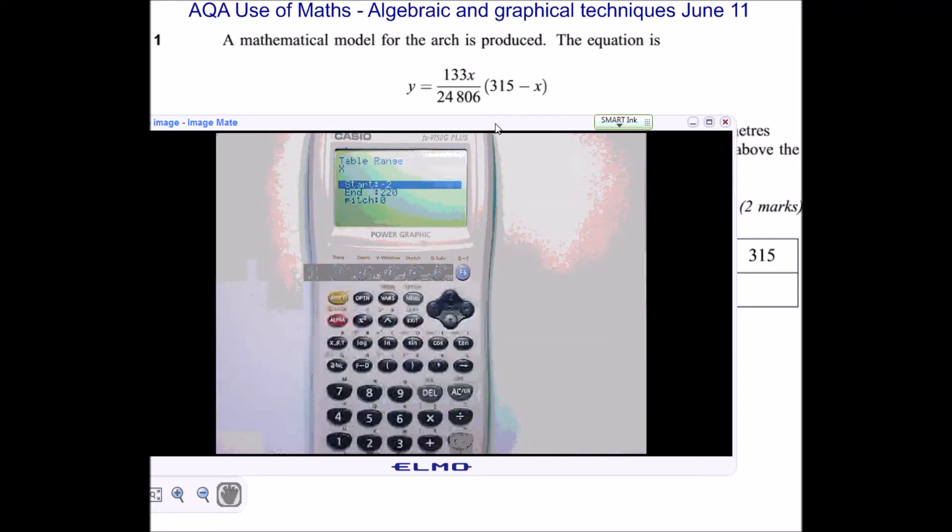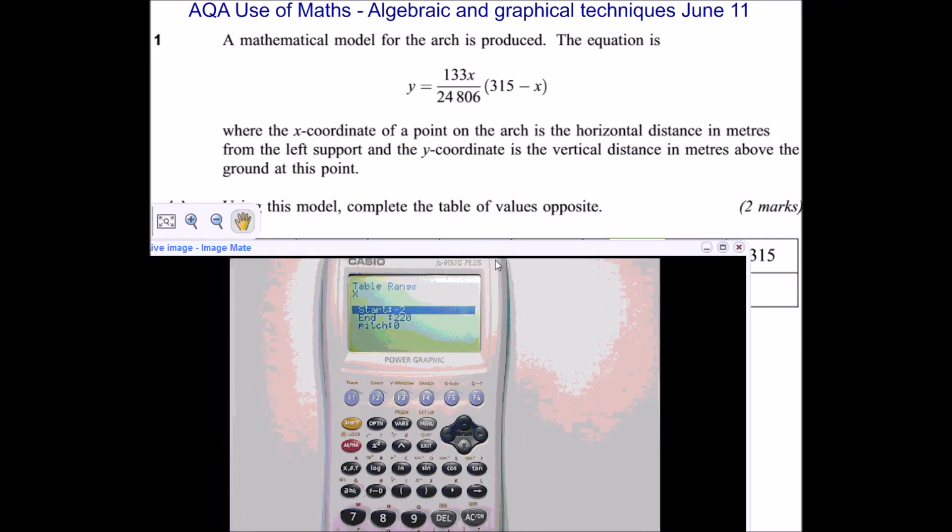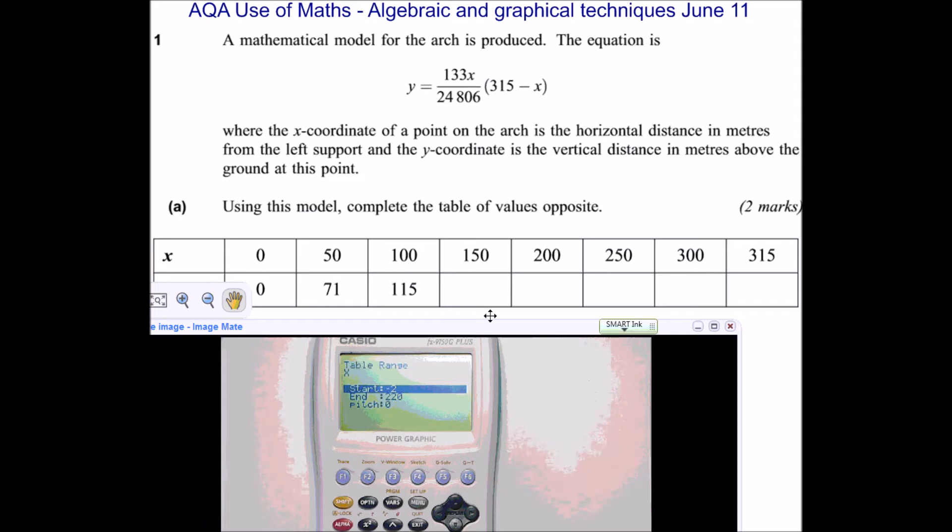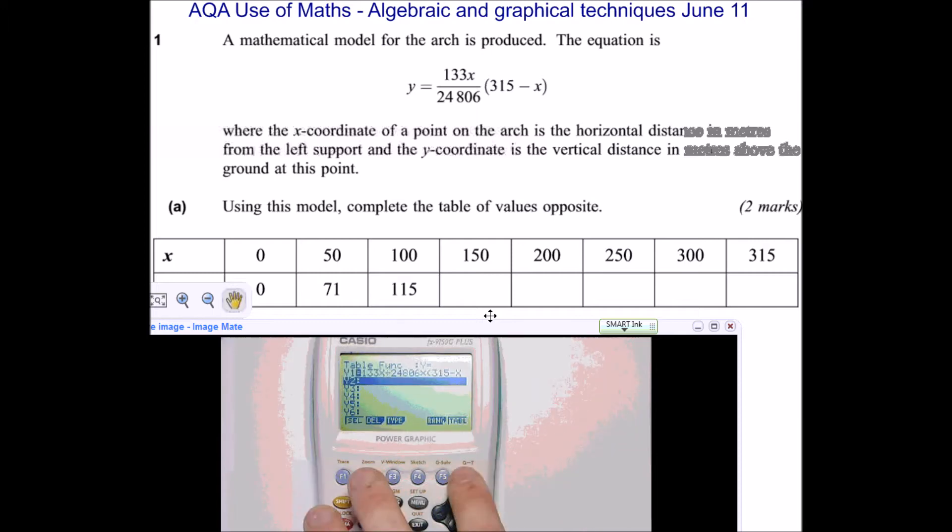I'm going to have to adjust the range. So for the range, we're going to have a look at the table and we can see that my x numbers are starting at zero and going up by 50 each time. So our start value, we want to be zero. And the last value is 315, but that doesn't match. I'm going up by 50 each time. So what I'm going to do instead is I'm going to go up to 300 and I'm going to go up 50 each time. And now I can press f6 or I can press exe and that will get me to my table of values.